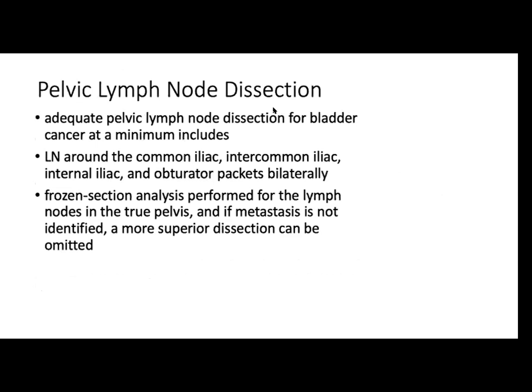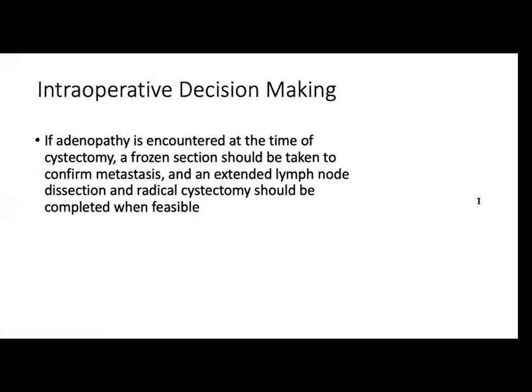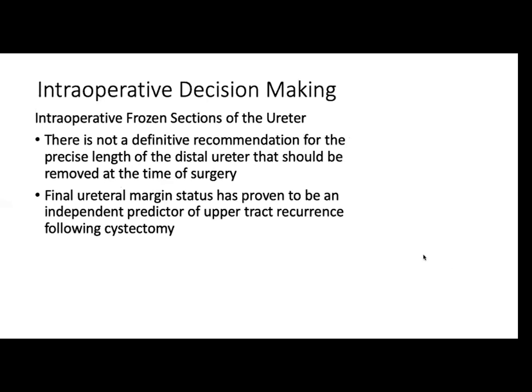Per Campbell 12th edition, the boundaries for pelvic lymph node dissection are: genitofemoral nerves laterally, internal iliac artery medially, Cooper's ligament inferiorly, and the point at which the ureter crosses the common iliac artery superiorly. Extended dissection involves the entire common iliac and presacral lymph node pocket. If adenopathy is encountered at the time of cystectomy, a frozen section should be taken to confirm metastasis. Extended lymph node dissection and radical cystectomy should be completed when feasible. However, cystectomy should not be performed when lymph node metastases are unresectable due to bulk, when there is periureteral disease, when the bladder is fixed at the pelvic sidewall, or when the tumor is invading the rectosigmoid colon.